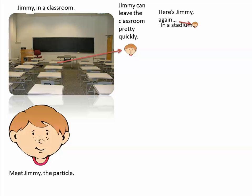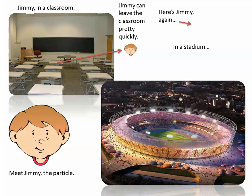Here's Jimmy again, but this time we place him in a stadium. Now imagine him trying to leave the stadium because he needs to deliver a message — it's quite a long walk. If Jimmy represents something like a carbon dioxide molecule and I'm a cell that has just produced some carbon dioxide, which is a toxin, I need to get rid of it. It's a lot easier if carbon dioxide is in the small situation — it can get out relatively quickly and efficiently.